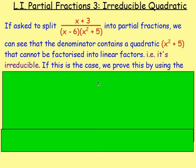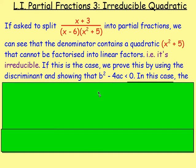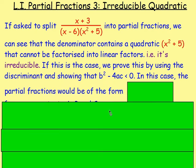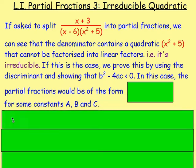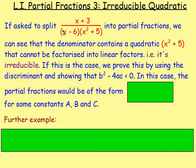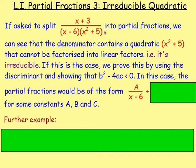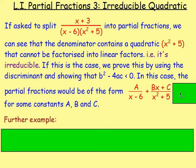If this is the case, first of all we would prove it is irreducible, and we prove it using the discriminant. Use the discriminant: b² − 4ac. If you cannot factorize it — if it is irreducible — then b² − 4ac will be less than 0. So you've got to prove that first of all. If this is the case, the partial fractions will be of the form: because we've got this (x − 6), which is a linear factor, we're just going to have A over (x − 6). But for the irreducible quadratic x² + 5, we will have that as (Bx + C) over (x² + 5).